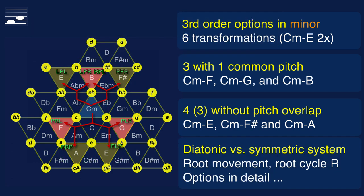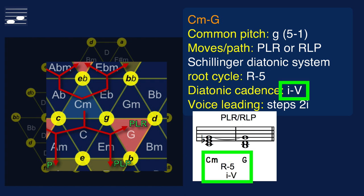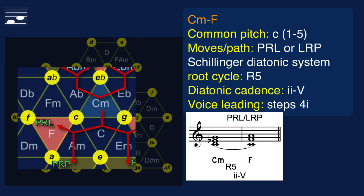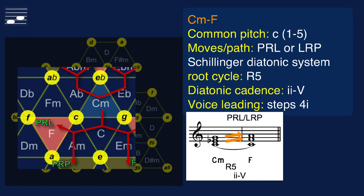Both the PLR and RLP transformation yield the target chord G major from C minor. The common note is G, the Schillinger root cycle is R-5, and we may encounter this as a standard 1-to-5 half cadence in minor. Voice leading involves two descending semitones. The other diatonic option brings us from C minor to F major through either PRL or LRP. The common note is C, found in diatonic major as a 2-to-5 chord change — a strong positive root cycle R-5. Total voice leading effort is four semitones, a traditional chord change without added harmonic interest.